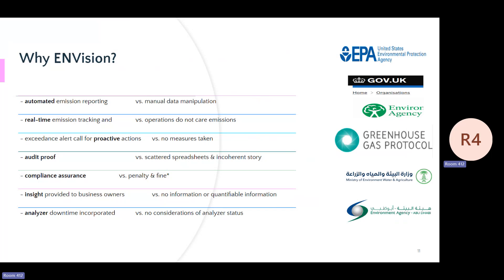Beyond that, events and alerts are sent to different users based on their access, so they can take action once an alert triggers — via email or mobile phone. They identify the problem and dispatch someone to fix it, decreasing exceedance duration. A client from Suncor reported in their internal management board meeting that exceedance duration decreased 40% in that year because of using this system.